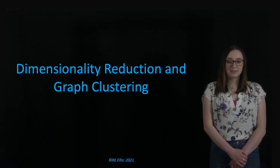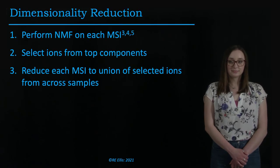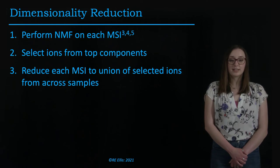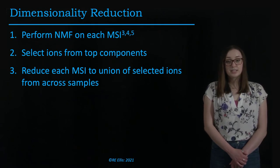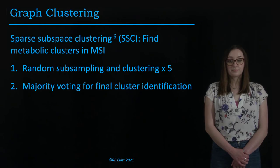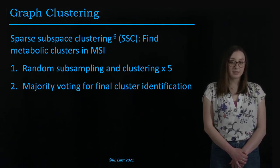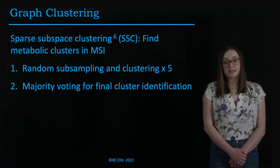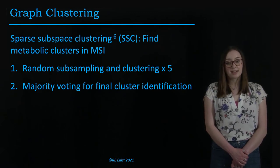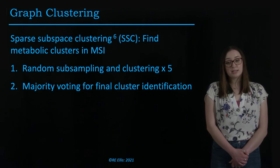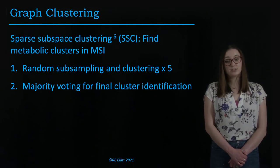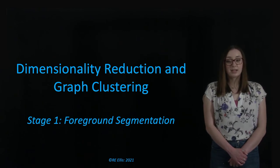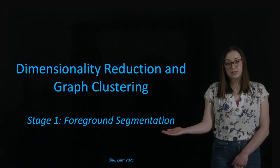Let's begin at the top of the pipeline with dimensionality reduction and graph clustering. Dimensionality reduction refers to the process of performing NMF on each MSI, selecting ions from the top components, and reducing each MSI to the union of the selected ions from across the samples. This will decrease the number of ion abundances for each pixel. Dimensionality reduction allows us to perform graph clustering. For this project, we propose the use of sparse subspace clustering, or SSC, to find metabolic clusters in the MSI. Due to the complexity of SSC, we must use random subsampling, so we perform clustering multiple times and use majority voting for final cluster identification to reduce variation. Dimensionality reduction and graph clustering are performed in multiple stages, the first of which is foreground segmentation.